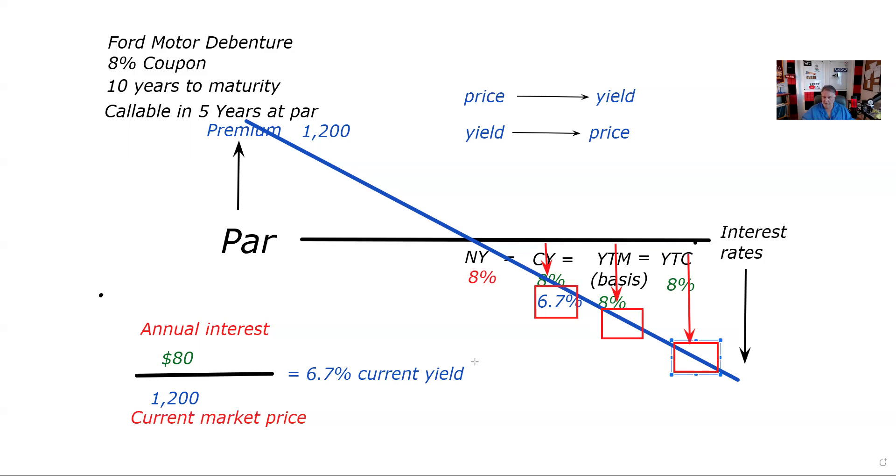Now, the other test question is that the MSRB requires that we quote yield to call on a bond at a premium because that's really what you're interested in.